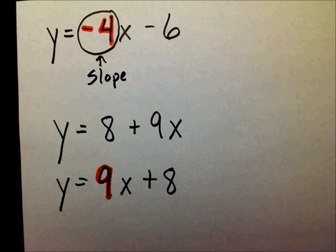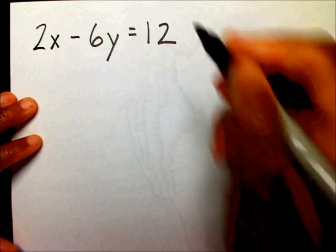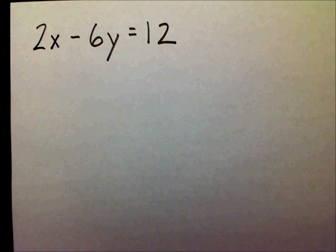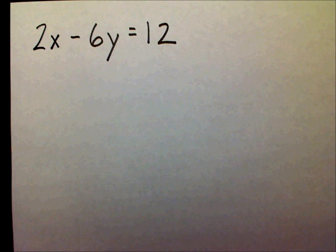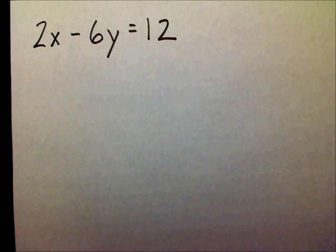But what if it was in standard form? Let's look at standard form. What if you had 2x minus 6y equals 12? We need to write it in slope-intercept form before we can find the slope. You may think the slope is 2 since it's next to the x, but no — you have to put it in slope-intercept form first.